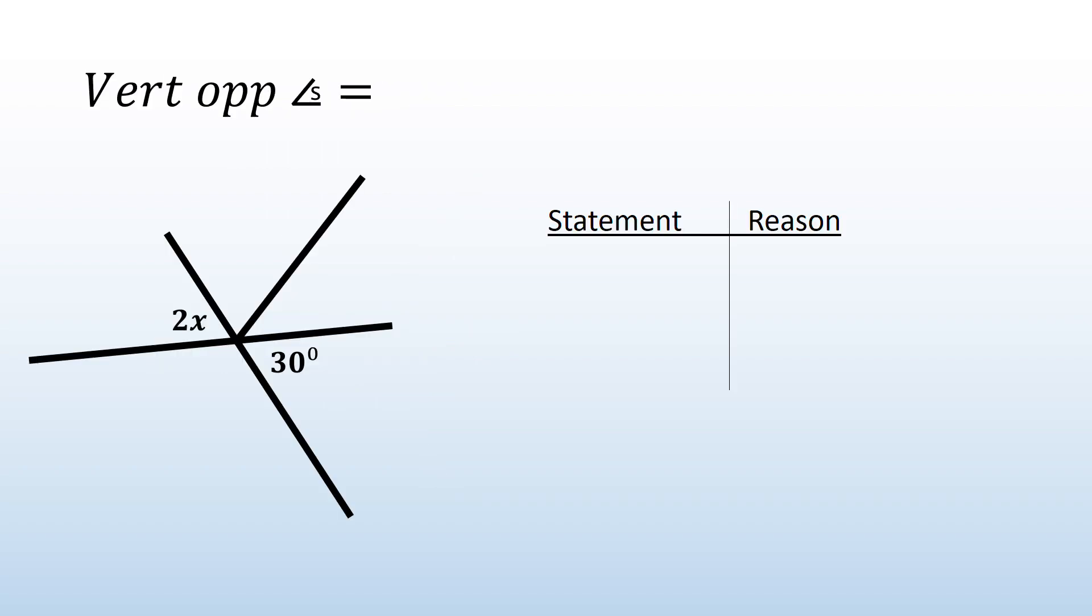Here's an example where you can clearly see that there's an x and the two angles are opposite each other inside that x. So that means I know that both of them are equal to each other. So my statement would be 2x equals 30. Reason: vert opp angles equal. That's how you write the reason. You must make sure that you're writing the reasons exactly the way that I'm putting them.